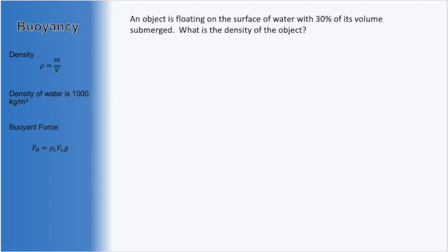For one more example, we have an object floating on the surface of water with 30% of its volume submerged. What is the density of the object? Similar to the last problem, the object is floating, so it is staying stationary, meaning whatever forces are present must be balancing each other out. The only information we are given is the percentage of the volume that has gotten submerged and the fact that it's floating in water. We can still draw our free body diagram and set up our net force equations, so let's try starting there.